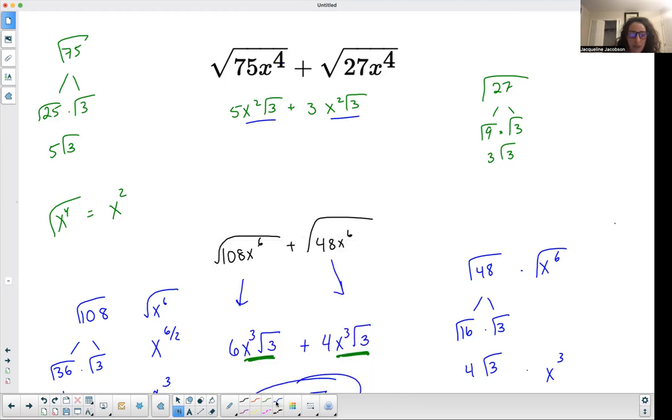And these are like terms because they both have an x squared and they both have a square root of three, which means that I have five of them and I want to add three of them, and that gives me eight of them. And don't change your exponent. And that gives me eight of them. So I have eight x squared times the square root of three. So I hope that helps. Let me know if it does. Let me know if it doesn't.